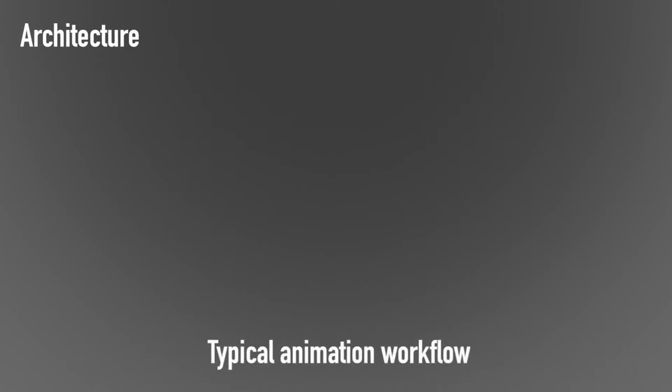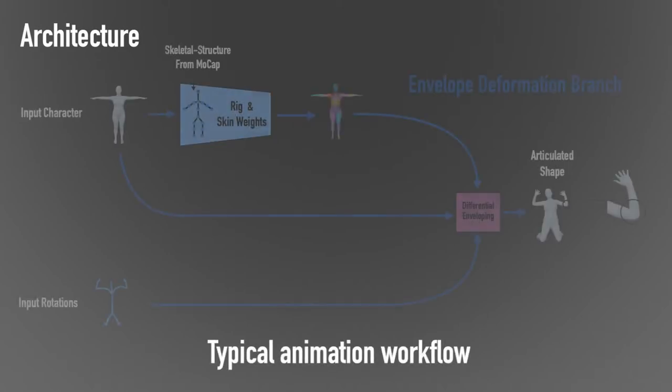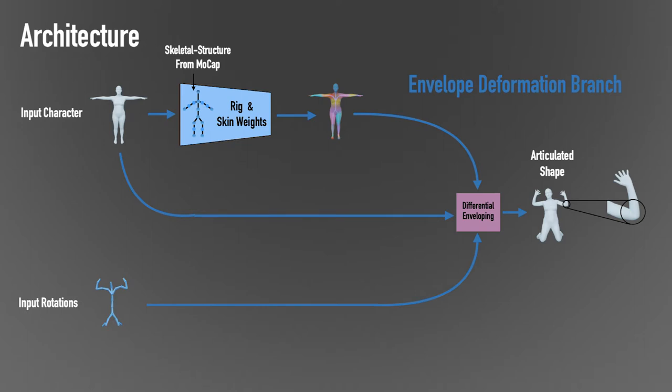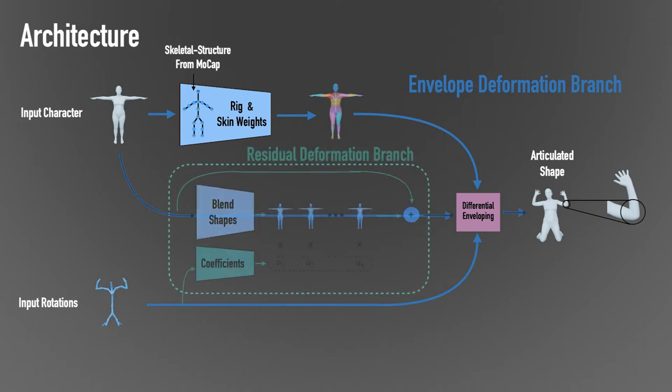Our architecture is inspired by the typical animation workflow and contains two main branches: an envelope deformation branch that learns to rig and skin the character with the mocap skeletal structure, and a residual deformation branch that learns a set of pose-dependent residual displacements.